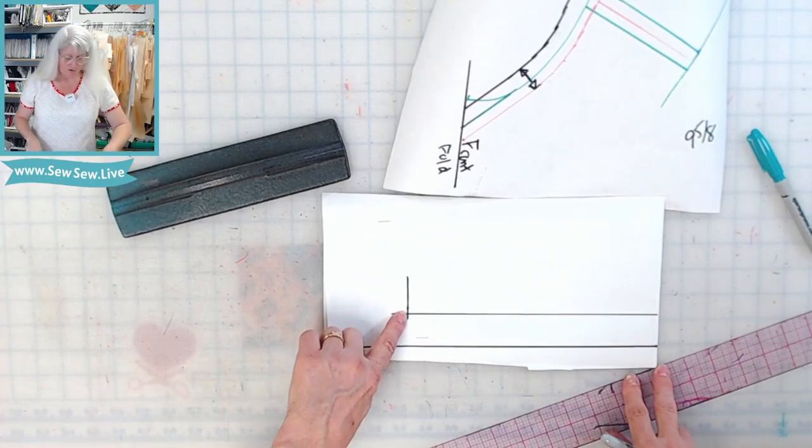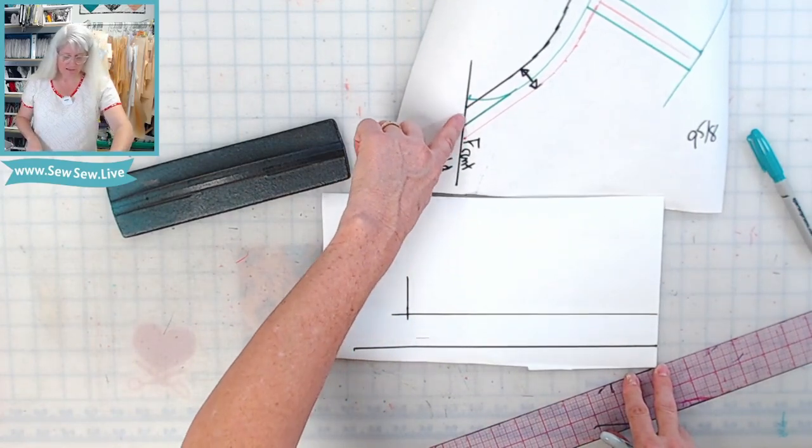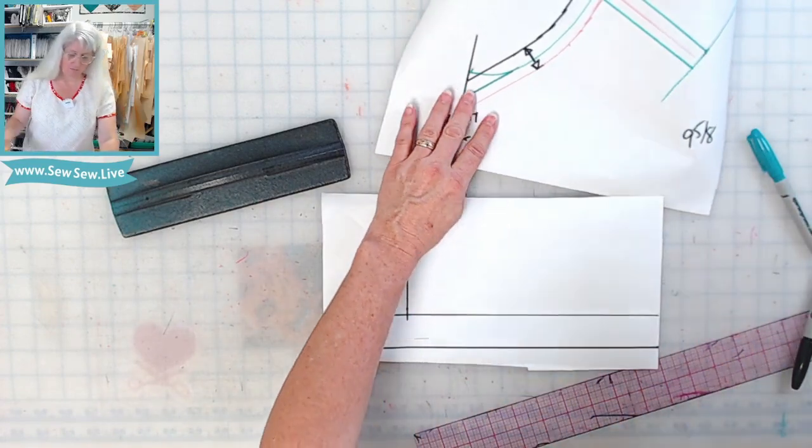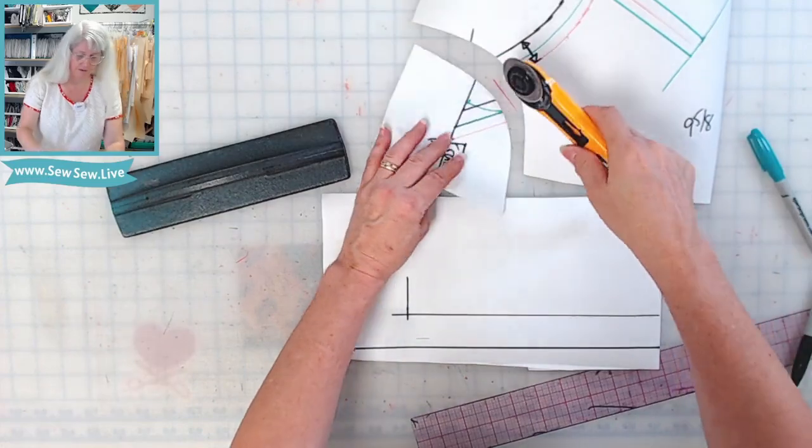Now we just need to determine this distance right here, the angle of our V. So let me show you what we're talking about here. We're just going to cut this off.